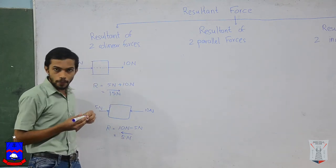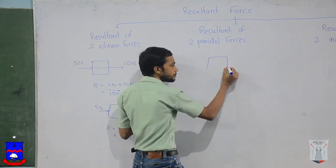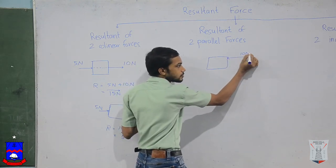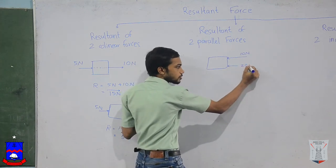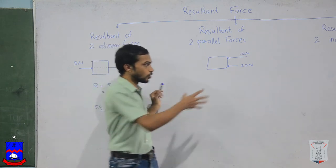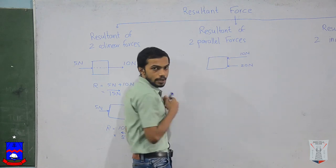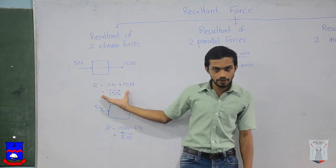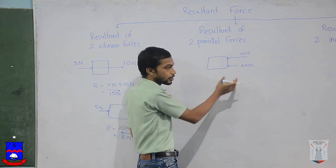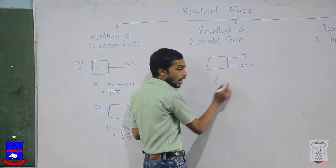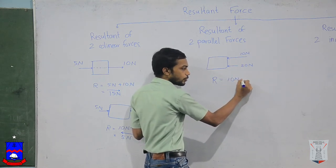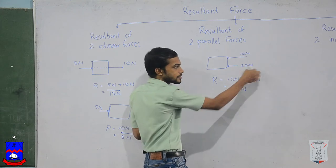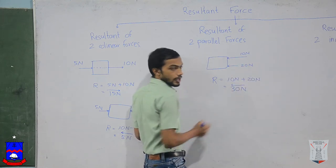Moving on to resultant of two parallel forces. Let's say you have an object. Someone is applying a force of 10 newtons and another one is applying a force of 20 newtons. These two forces are acting in the same direction. As we did earlier, if forces are in the same direction you add them to get the resultant force. So the resultant force R will be 10 newtons plus 20 newtons, giving you 30 newtons, in the same direction as these two forces — towards the left.